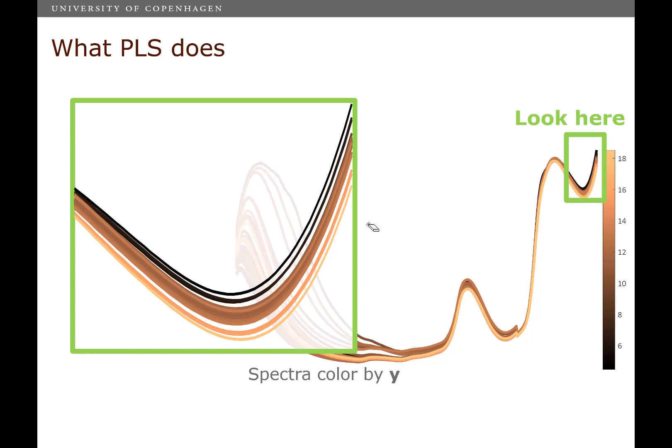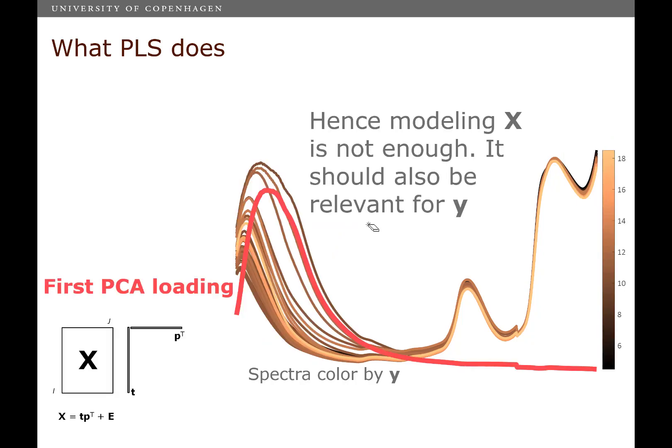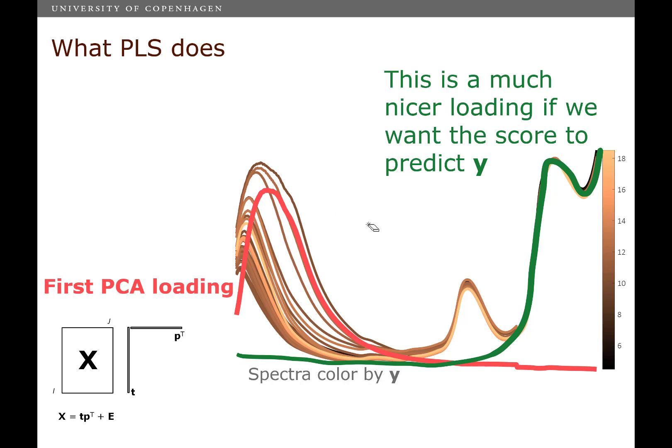Especially because if you look to the right, you can see that there is an area here where there's actually a lot of good information related to Y. It's just not very big. And that's why PCA would not find it immediately. So instead of doing a PCA-like model,